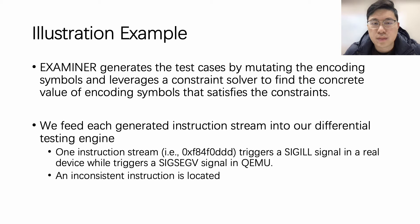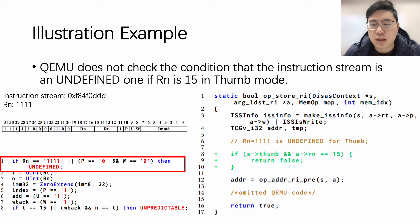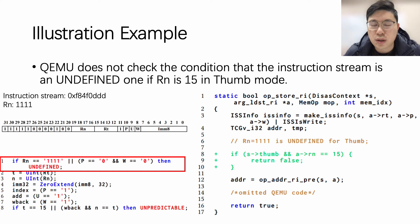After investigating the root cause, we found it is due to a bug in QEMU. The encoding symbol RN of instruction stream 0xF84F0DDD is 1111. When RN equals 1111, meaning the value is 15, and the instruction is in sub-mode, it should be an undefined instruction and a SIGILL signal should be triggered. However, QEMU continues the decoding process directly without any check. We submitted this bug to QEMU developers and the patch was issued, marked in green color.